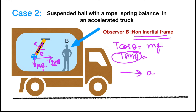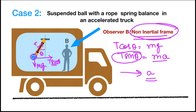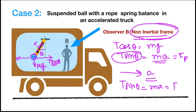This pseudo force is given by the mass of the ball m multiplied by the acceleration of the non-inertial frame. Since the non-inertial frame accelerates with the same acceleration as the truck, the pseudo force Fp equals ma. The direction of this pseudo force is opposite to the direction of acceleration of the non-inertial frame. So here, T sin theta equals ma, the pseudo force. This way the ball is at rest from the perspective of observer B in the non-inertial frame. By these two cases, we understood that in a non-inertial frame we must consider a pseudo force to explain motion as per Newton's laws of motion.